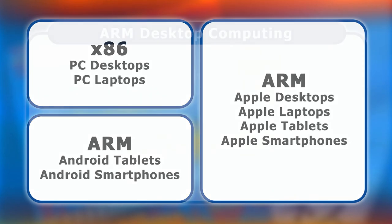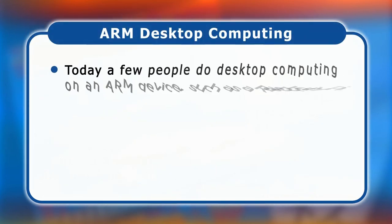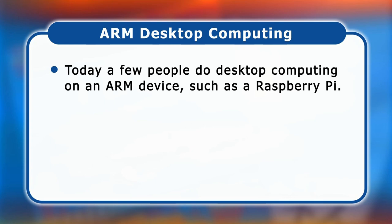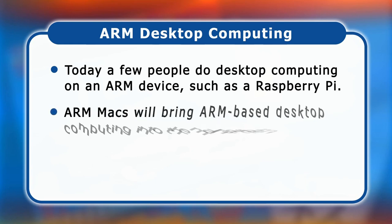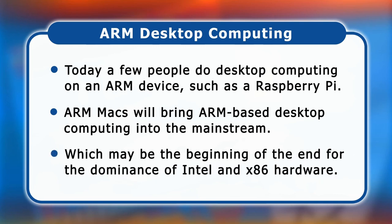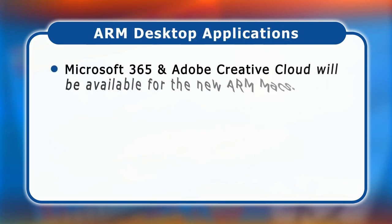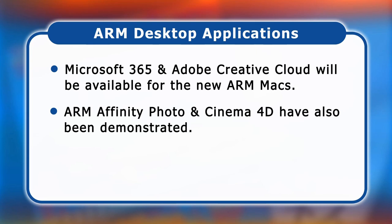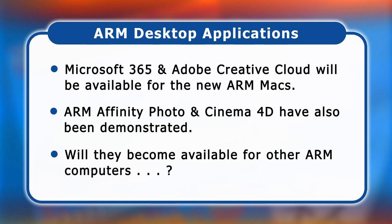The use of ARM processors for mainstream desktop computing is also a big development. Today a few people do some or all of their desktop computing on ARM-based devices such as a Raspberry Pi, but this remains unusual. As new ARM-based Macs become more common, ARM-based desktop computing will become run of the mill, and this may be the beginning of the end for the dominance of Intel and x86. Apple has already announced that Microsoft 365 and Adobe's Creative Cloud will be directly supported on its new ARM Macs, and it has also demonstrated ARM versions of Affinity Photo and Cinema 4D. As more heavyweight applications are ported natively to ARM Macs, they could also become available for other ARM-based computers, potentially triggering a much wider transition to ARM devices.